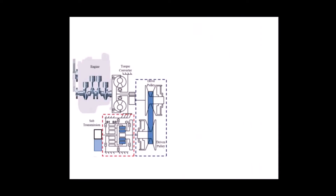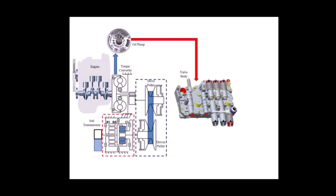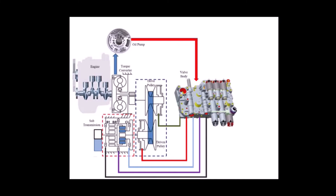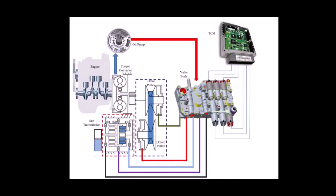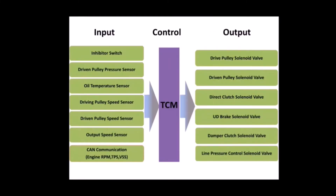Let us understand how hydraulic pressure is supplied to clutches, brakes, and the drive and driven pulleys. The torque converter transmits torque to the transmission and drives the oil pump. The pump creates pressure which is applied to the valve body. The hydraulic pressure is then routed to the clutches, brakes, and drive and driven pulleys in accordance with the activation of solenoid valves. Solenoid valves are controlled by the transmission control module.